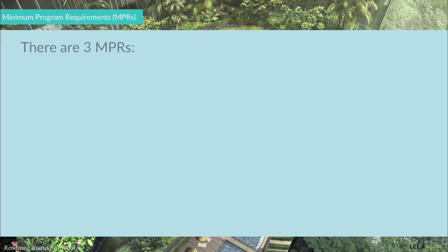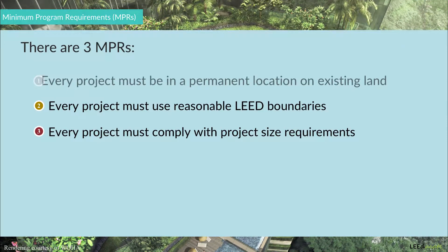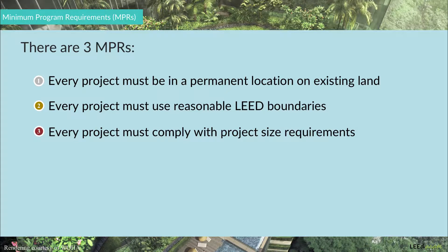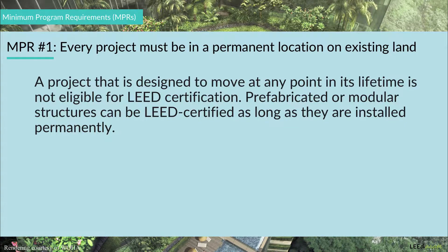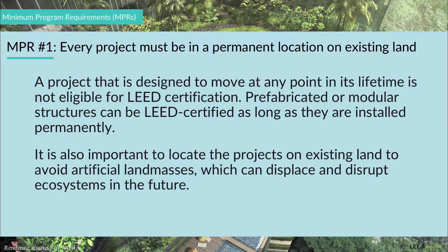There are three MPRs. MPR number one: every project must be in a permanent location on existing land. A project that is designed to move at any point in its lifetime is not eligible for LEED certification. Since a significant portion of LEED's credits are dependent on the project's location, the certification is awarded according to that particular location. Prefabricated or modular structures can be LEED certified as long as they are installed permanently. It is important to locate projects on existing land to avoid artificial land masses, which can displace and disrupt ecosystems in the future.